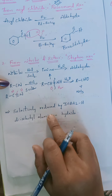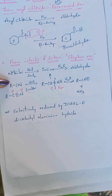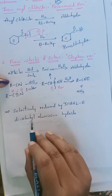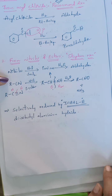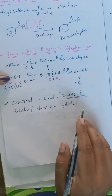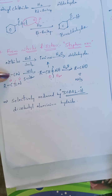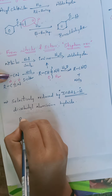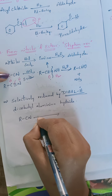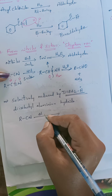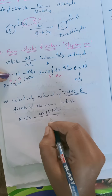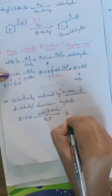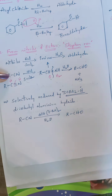Selectively, nitriles and esters can also be reduced to corresponding aldehydes using the selective reducing agent DIBAL-H — diisobutylaluminium hydride. Taking nitrile R–CN: when it undergoes reduction in presence of diisobutylaluminium hydride followed by hydrolysis, it converts into R–CHO, the aldehyde.